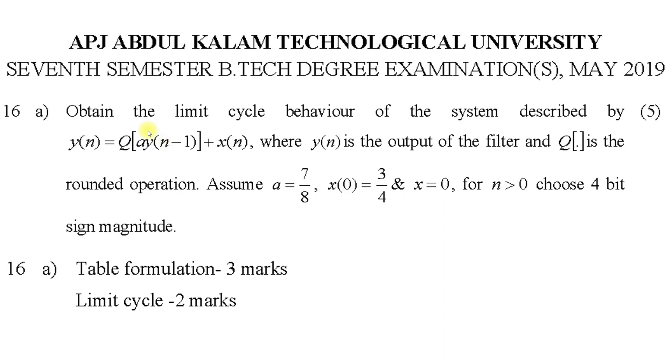This is a university question from the fifth module related to zero input limit cycle oscillations, belonging to the May 2019 supplement examination, question number 16a. It carries a marks of 5, with the scheme of evaluation being table formation 3 marks, limit cycle 2 marks. This type of question is frequently asked in university examinations. Comparatively, it is a simple problem to solve.